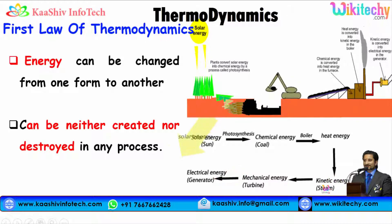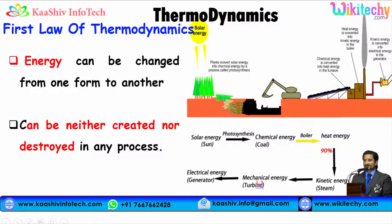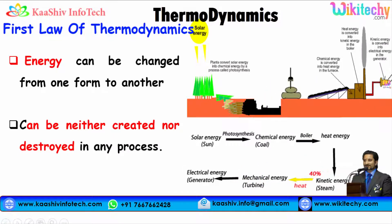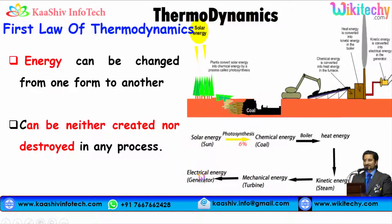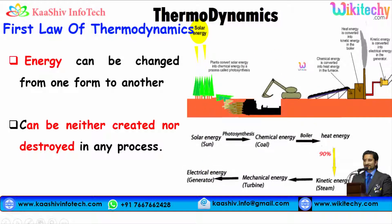Via the steam, it is passed to the turbine for mechanical energy and automatically the turbine starts rotating. You are able to see the rotation here, which will convert into electrical energy via the generator. This is how the energy is converted.